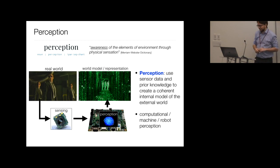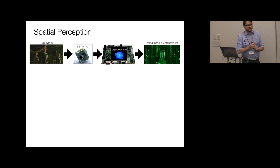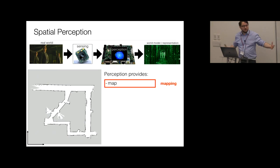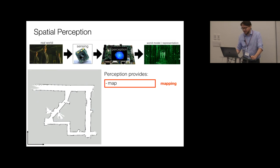What do we typically care about in spatial perception? First, we want to reconstruct a map of the environment — a top view showing free space and obstacles. This is the mapping part of spatial perception. The second portion is about figuring out where the robot is — estimating the pose of the robot — which is called localization.